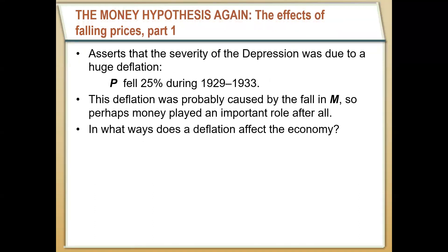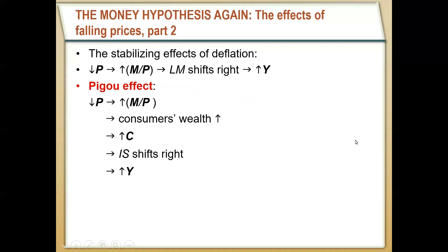We need to think more deeply about what happens when prices fall. The money hypothesis takes into account that prices fell really significantly throughout the Great Depression, asserting this decline was due to the fall in the money supply. Thinking back to the quantity theory of money, the money supply and price level are always closely related, so as the money supply fell, prices had to respond by falling. On its surface, deflation could actually, in theory, be stabilizing: as prices fall, real money balances increase, which shifts the LM curve to the right and increases total spending — this is the Pigou effect. Lower prices mean higher real money balances, meaning people's money goes further, leading them to increase consumer spending, which shifts the IS curve to the right and also increases income.